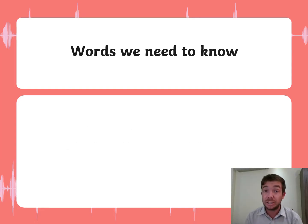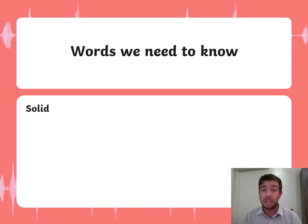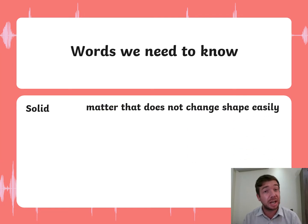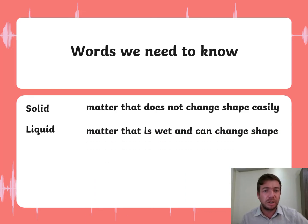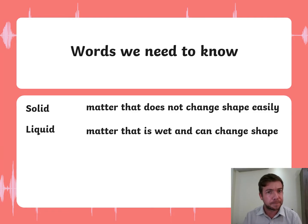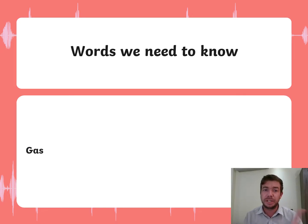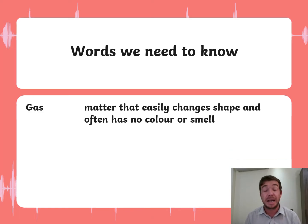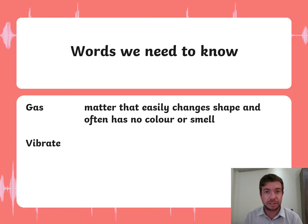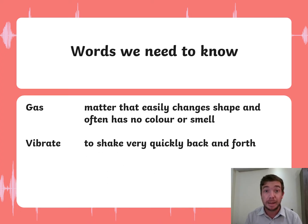Let's start with the words we need to know to understand today's concepts. First, we go back to words from Unit 3. A solid is matter that does not change shape easily. A liquid is matter that is wet and can change shape. Gas is matter that easily changes shape and often has no color or smell. A new word is vibrate — to shake very quickly back and forth.